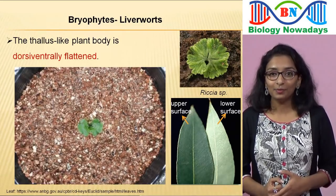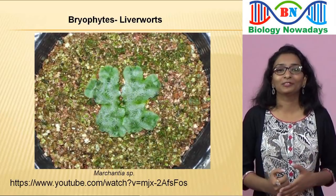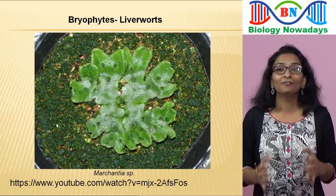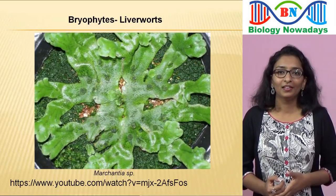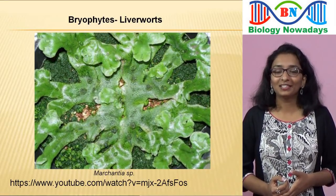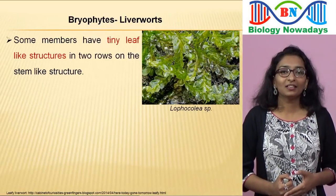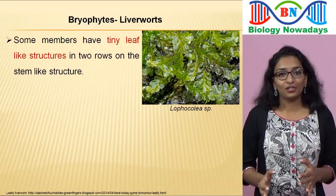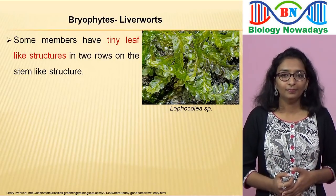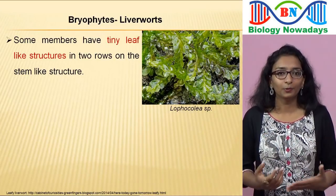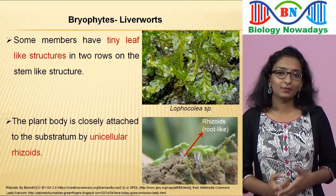Dorsiventral means having distinct upper and lower surfaces, as in the case of a leaf. Let's watch a time-lapse video on the growth of Marchantia — it's really beautiful. Marchantia has a flat thallus attached closely to the substratum. Some members of liverworts have tiny leaf-like structures in two rows on the stem-like structure. The plant body of the liverworts is closely attached to the substratum by unicellular rhizoids.